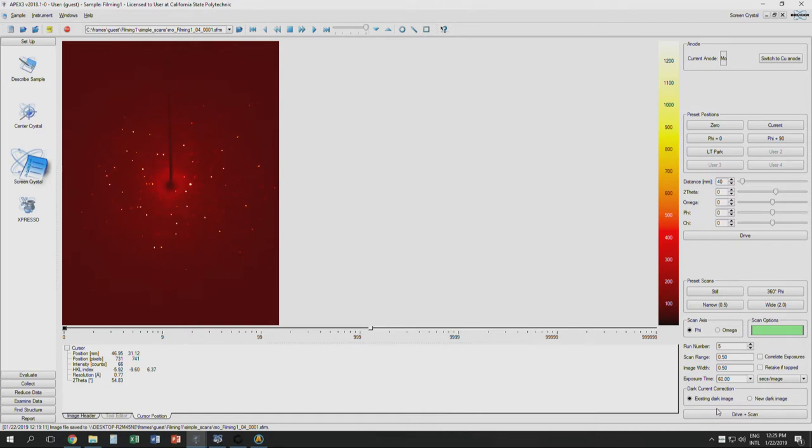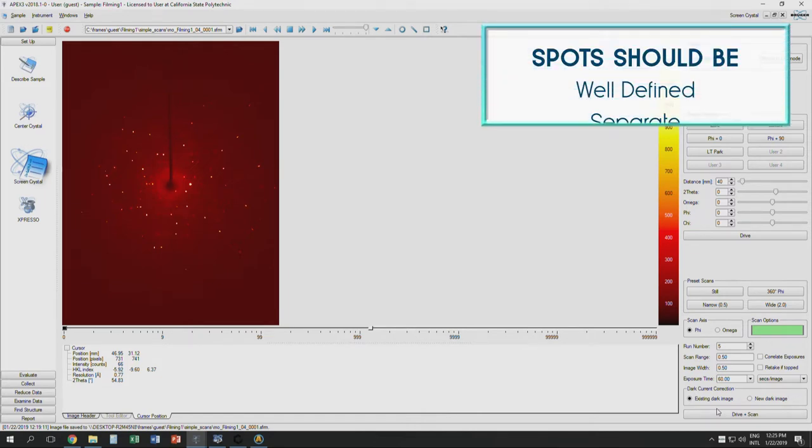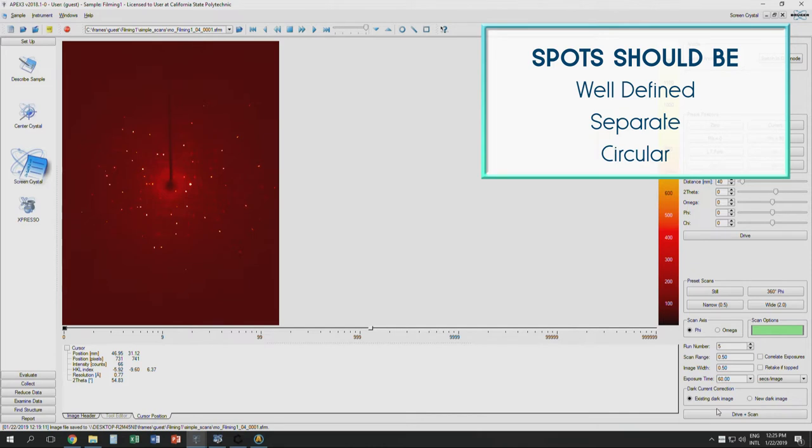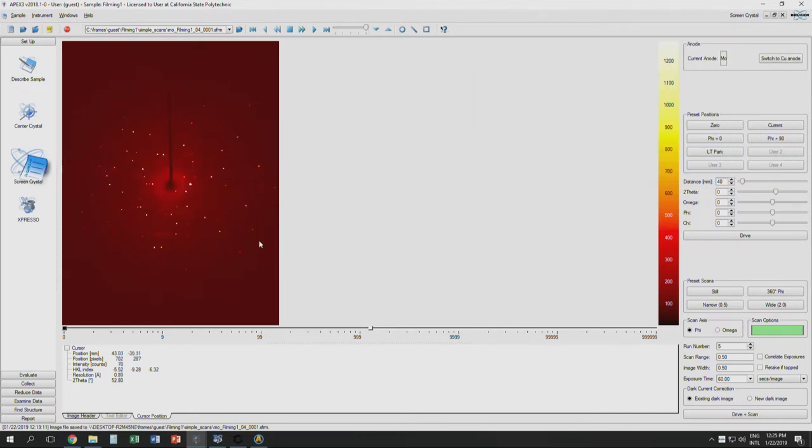For a good crystal, the spots will be well defined, separate, and circular. Notice also how the spots seem to have a pattern to them. This is the first gauge of the quality of your crystal.